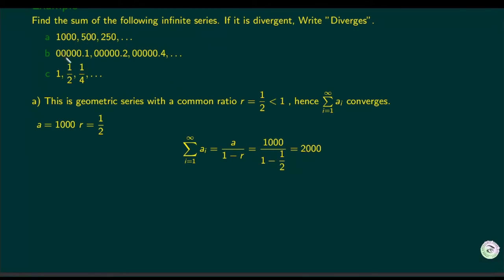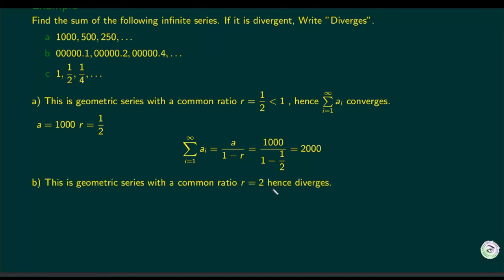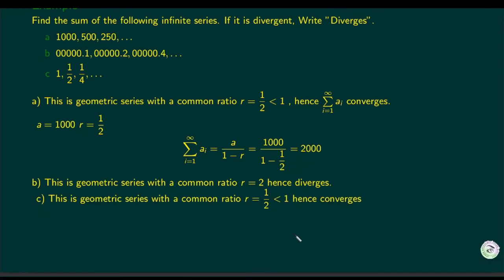For the next sequence, a is 0.001 but the ratio is 2. Since the ratio is 2, which is greater than 1 in absolute value, this series diverges. For the third example, a equals 1 and r equals one-half, so it converges to 1/(1 − 1/2) = 2. So: series (c) converges to 2, (b) diverges, and (a) converges to 2000.